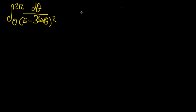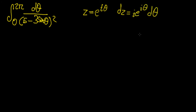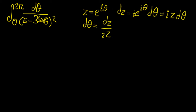When we have a function of a trigonometric function like this, we establish a complex variable z in the form of e to the power of i times theta — the polar form with magnitude 1. This means the differential dz equals i times e^(iθ) dθ, which we can write as iz dθ. This allows us to write dθ equals dz over iz, and this is one of the main substitutions we're going to make.